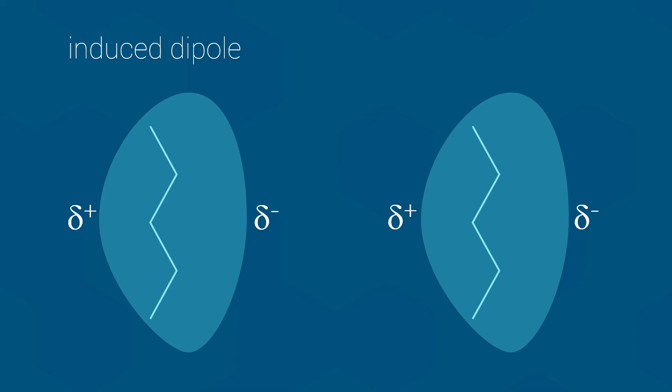As you can imagine, the second molecule can now do the same to its other neighbors, and then they can do the same to other molecules, and so on. Anyway, back to these two molecules.